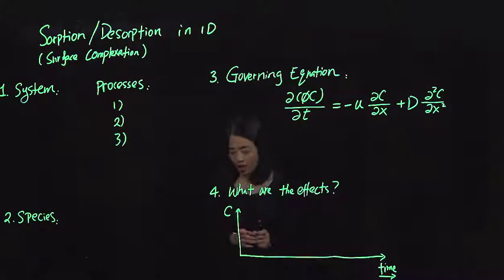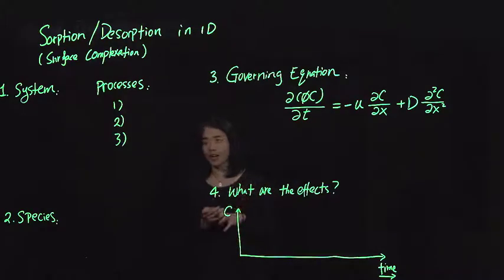So we're going to talk about another type of reaction within a 1D column, which is absorption-desorption.